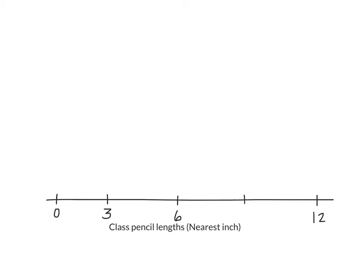We can divide right here — this would be three inches and this would be nine inches. And that would be one, two, three, four, five, six, seven, eight, nine, ten, eleven, twelve. You'll also notice at the bottom it says 'class pencil lengths to the nearest inch.' It is important for every line plot and every graph to have a title so that people know what they're looking at. The title of our line plot is 'class pencil lengths,' and then in parentheses I write the units — inches — so that when they look at these numbers on my number line, they know what the units are.